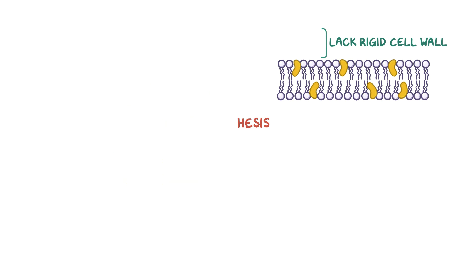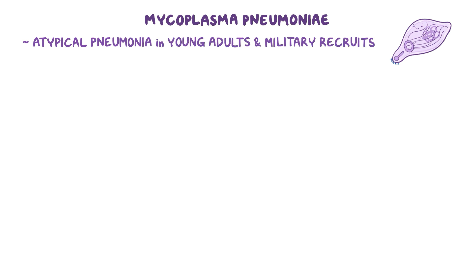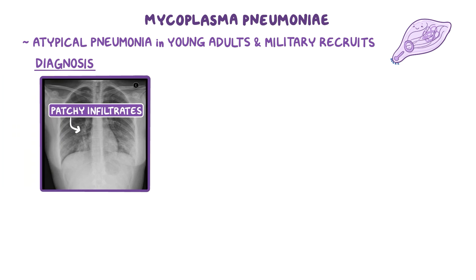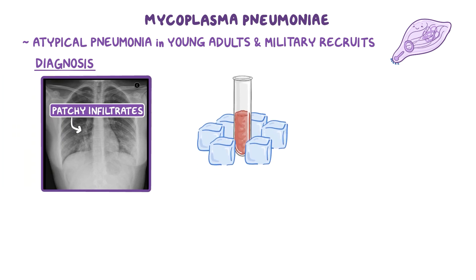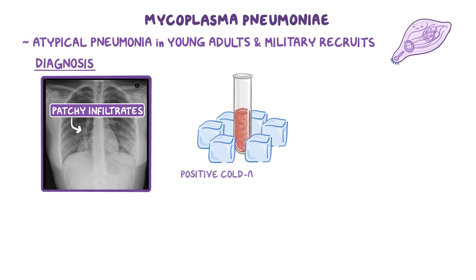As a quick recap, mycoplasma pneumoniae is a small bacterium that causes atypical pneumonia in young adults and military recruits. Diagnosis of atypical pneumonia can be based on a chest x-ray, which reveals patchy infiltrates, or on a positive cold agglutinin test, where clumping of red blood cells happens at 4 degrees Celsius.